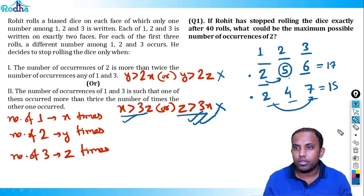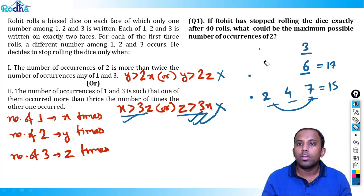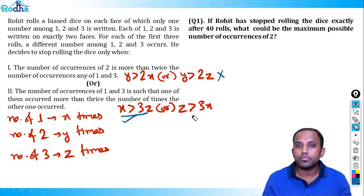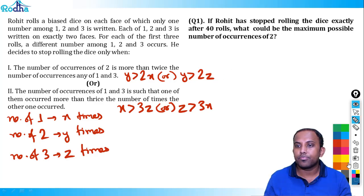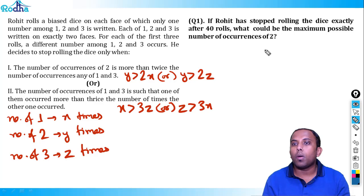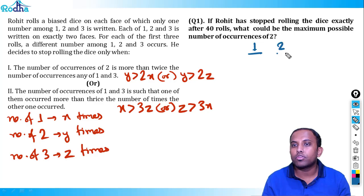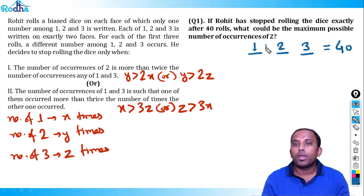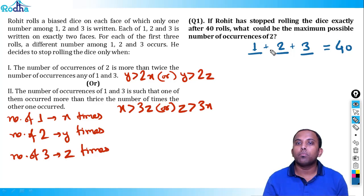Now let's look at the questions. Question 1: If Rohit stopped rolling exactly after 40 rolls, what is the maximum possible number of occurrences of 2? We need x + y + z = 40 and want to maximize y. Since 2 appears only in the first condition (y > 2x or y > 2z), let's think about maximizing y by considering values around 10, 20, 10.